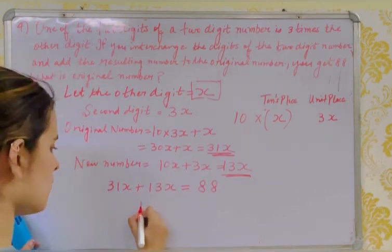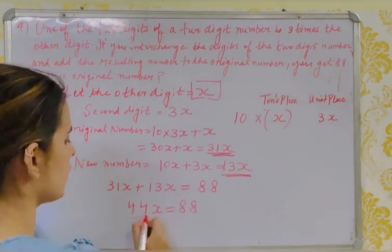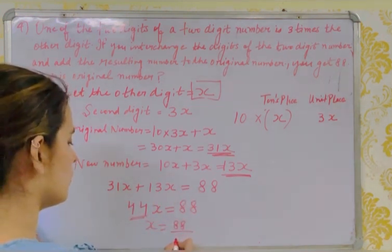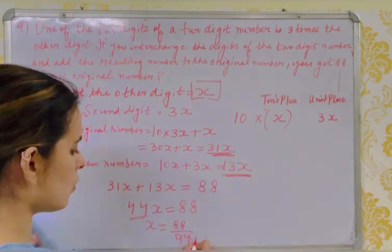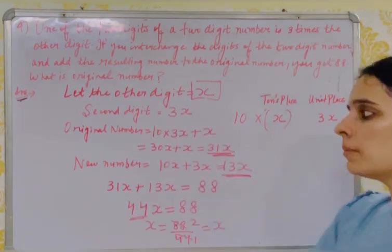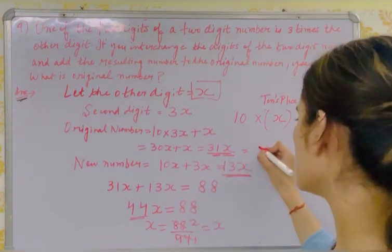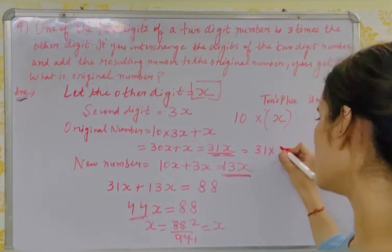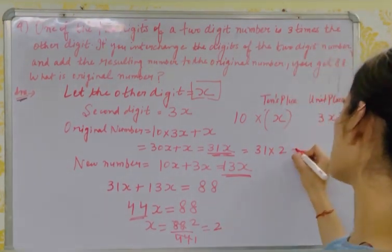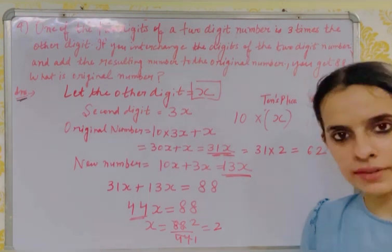So 44x = 88, which means x = 88/44 = 2. To find the original number, substitute x = 2 into 31x: 31 × 2 = 62. So the original number is 62.